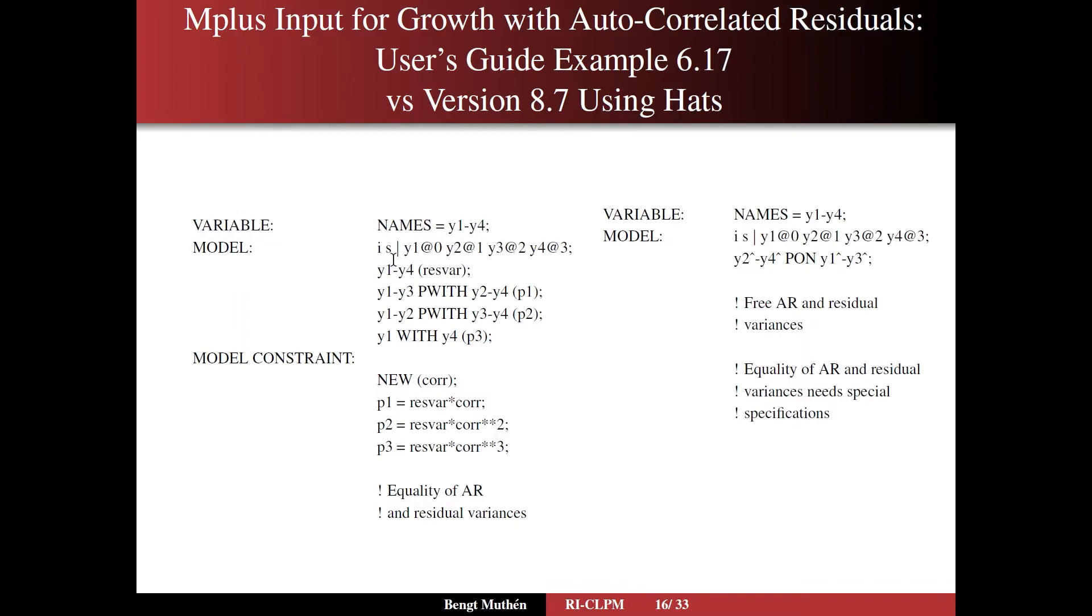You have four variables, and you have a linear growth model, i and s, with a linear development over time. And you have residual variances, and here we set them equal across time. And then we have these pairwise with statements for lag 1 and for lag 2 and for lag 3 here. These are the only cases with four variables.